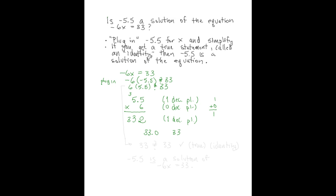So returning now to the equation that we were working on here, we know that 6 times 5.5 is 33, and we want to know, is 33 equal to 33? Well, that's a true statement. 33 does equal 33, so we'll write that this is true, and that is also known as an identity.